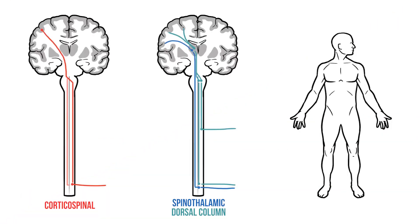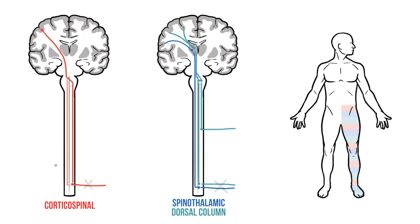We've now drawn out the major tracts of the spinal cord. The last thing to do is look at how these might be affected clinically. Remember, the symptoms of nerve damage will always be distal to the location of that damage. So if a peripheral nerve was severed, we'd lose all motor and sensory supply beyond that point on the same side of the body. However, if the spinal cord was severed, we'd see a complete loss of motor and sensory information below the level of the injury, and on both sides of the body.